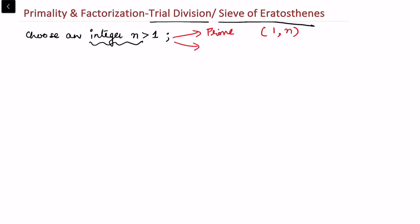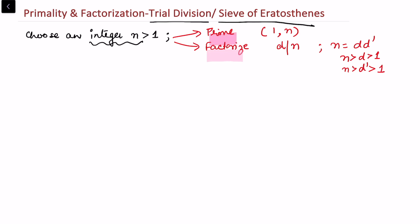The second objective is to factorize n — find some d that divides n, and a d' such that n = d × d', where d is strictly greater than 1 and strictly less than n, and similarly d' is strictly greater than 1 and strictly less than n. As we know, in public cryptosystems finding a large prime or doing a factorization corresponding to a prime is the hard problem, and we do not have efficient algorithms to do that.